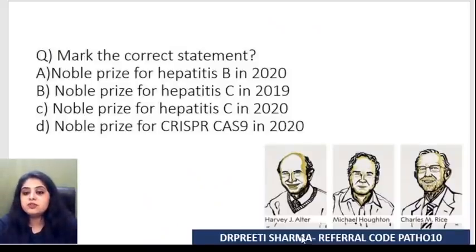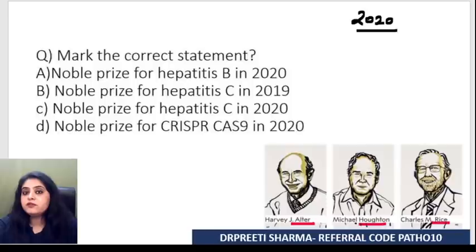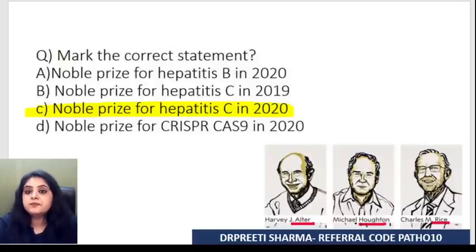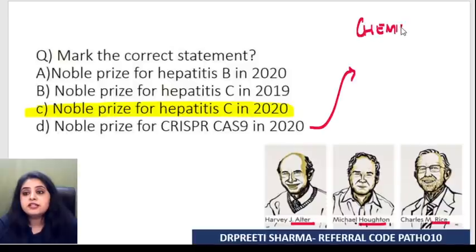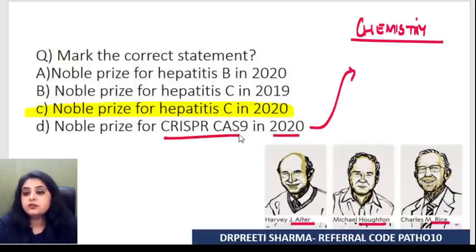Next is a scientist-based question about three scientists: Alter, Houghton, and Rice. In 2020 during the lockdown, they received the Nobel Prize for their discovery of the hepatitis C virus. There's also another Nobel Prize mentioned — for CRISPR-Cas9, in the field of chemistry, received by two female scientists: Jennifer Doudna and Charpentier, also in 2020. For hepatitis C, the answer is Alter, Houghton, and Rice.